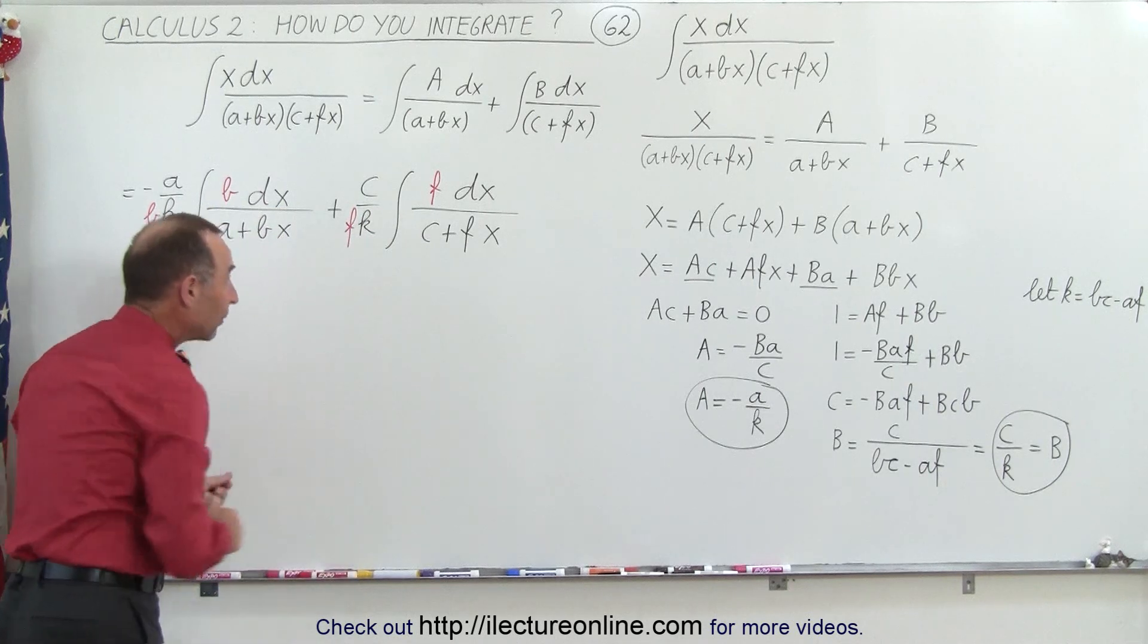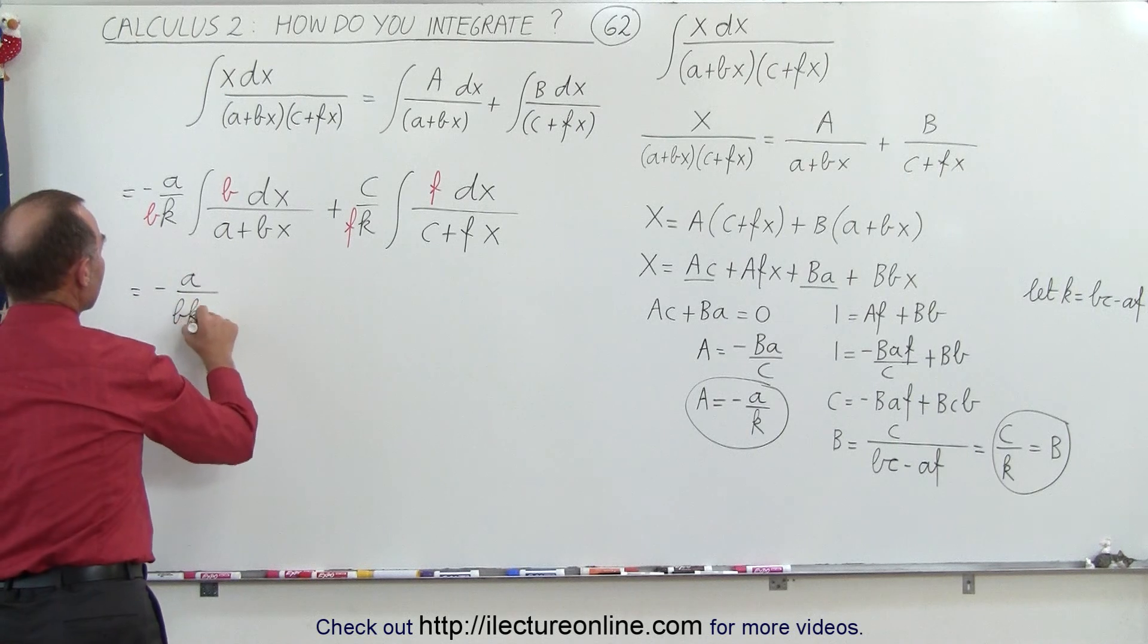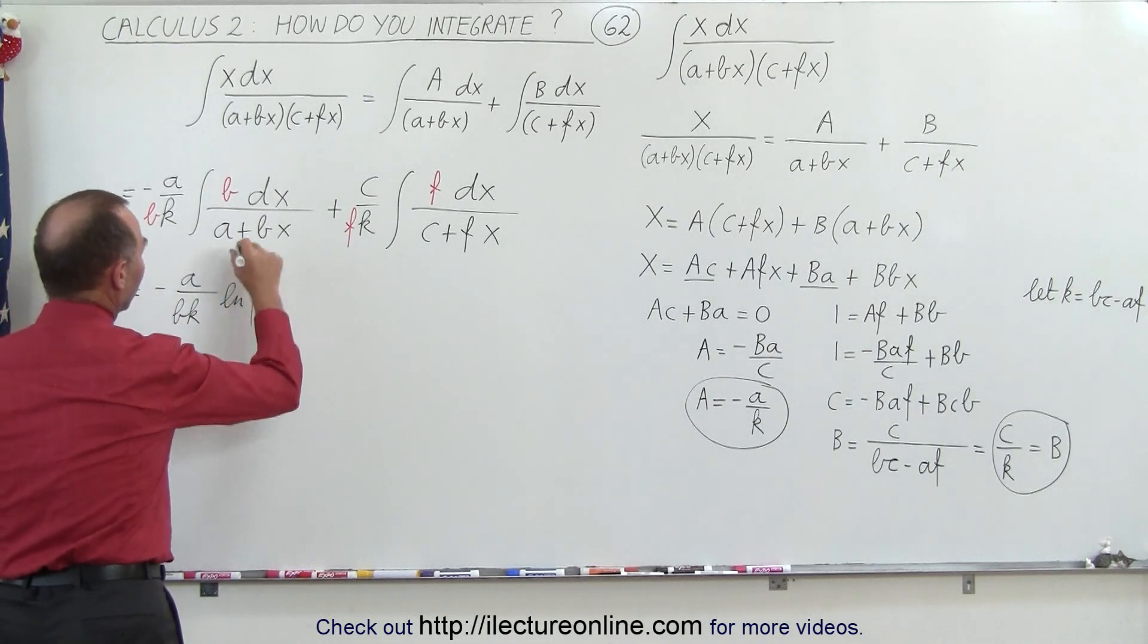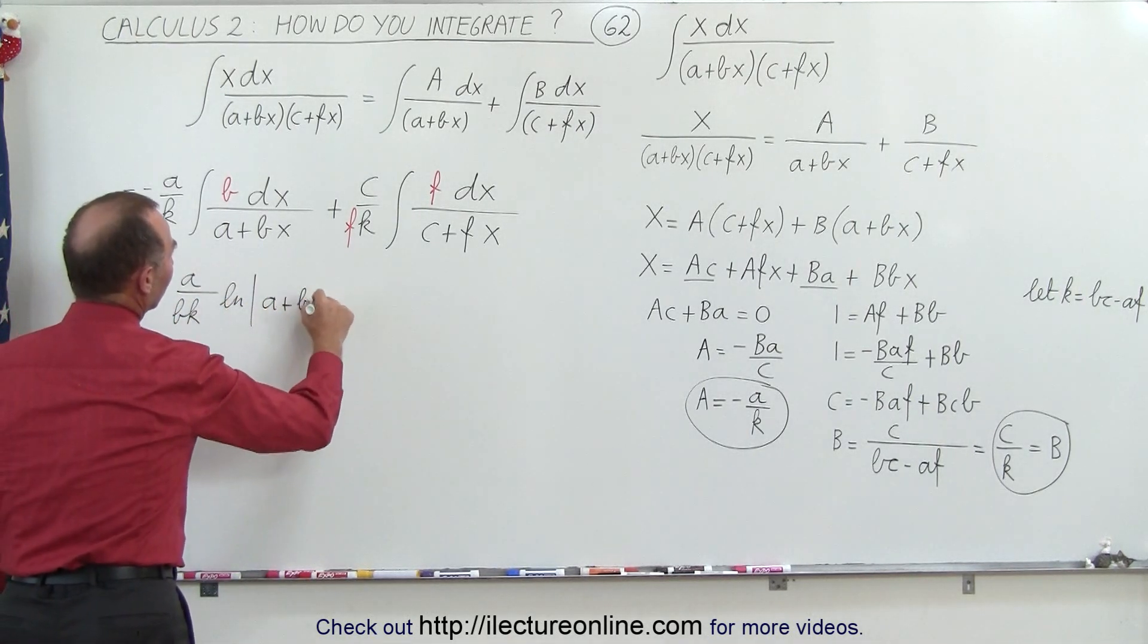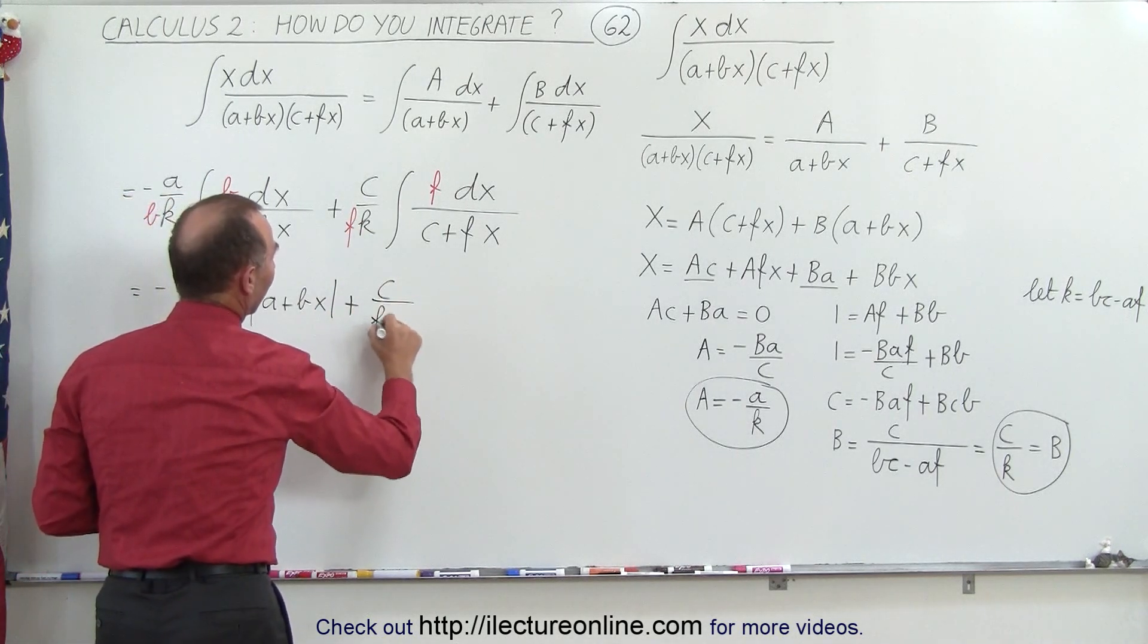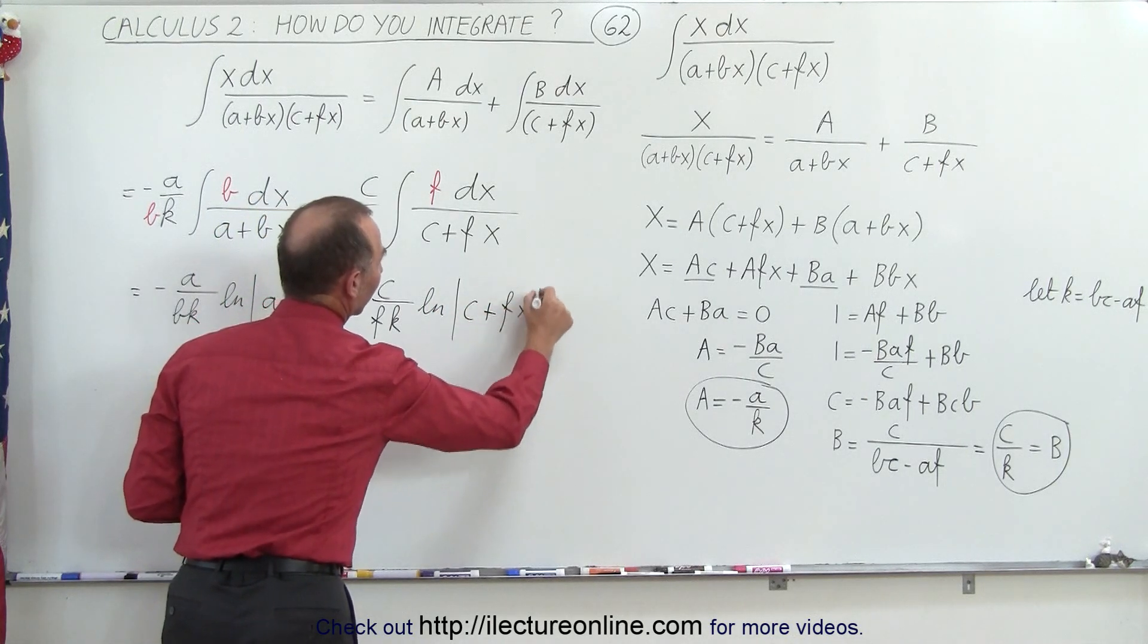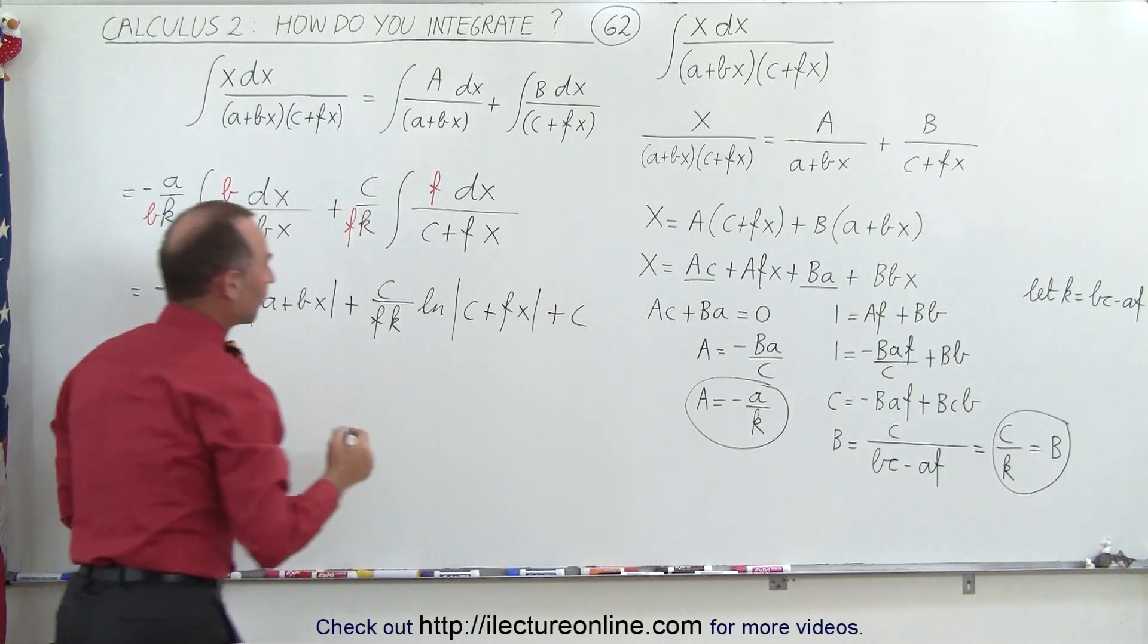Now we can go ahead and integrate those. So this becomes minus a over bk times the natural log of a plus bx plus here we have c over fk times the natural log of c plus fx and of course our constant of integration.